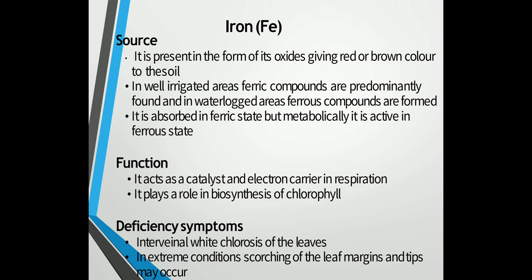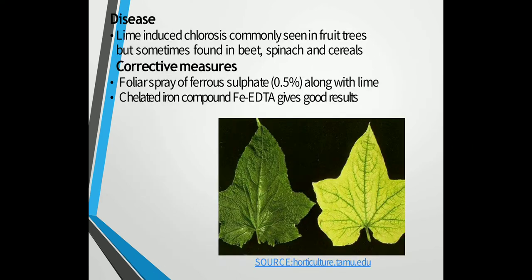The deficiency symptoms of iron are as follows. The first one is intervenal white chlorosis, meaning the young leaves are always severely affected and the principal veins may remain green in color. In extreme conditions, scorching of the leaf margins and tips may occur. The diseases induced include lime-induced chlorosis, commonly seen in fruit trees but sometimes found in beetroot, spinach and cereals.